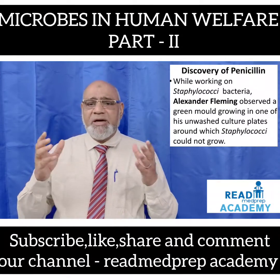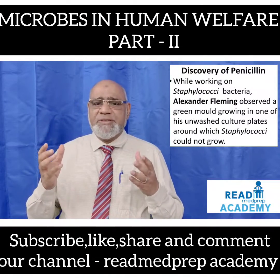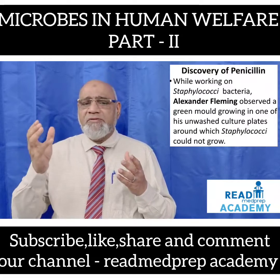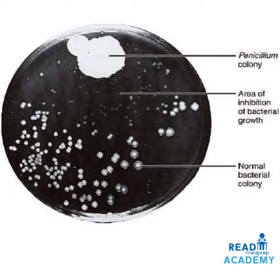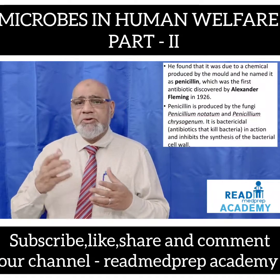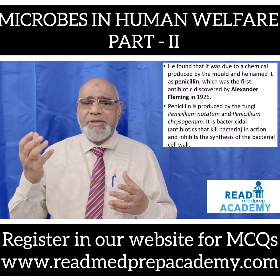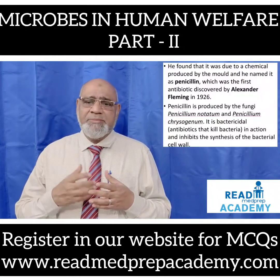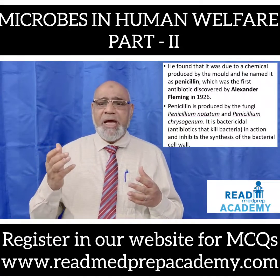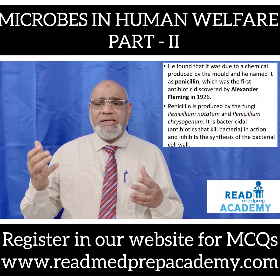Regarding the discovery of penicillin: while working on Staphylococci bacteria, Alexander Fleming observed a green mold growing in one of his unwashed culture plates, around which the Staphylococci could not grow. You can see the plate where the penicillin colony is growing alongside the normal bacterial colony, with an area of inhibition of bacterial growth in between. He found this was due to a chemical produced by the mold and named it penicillin — the first antibiotic, discovered in 1926.